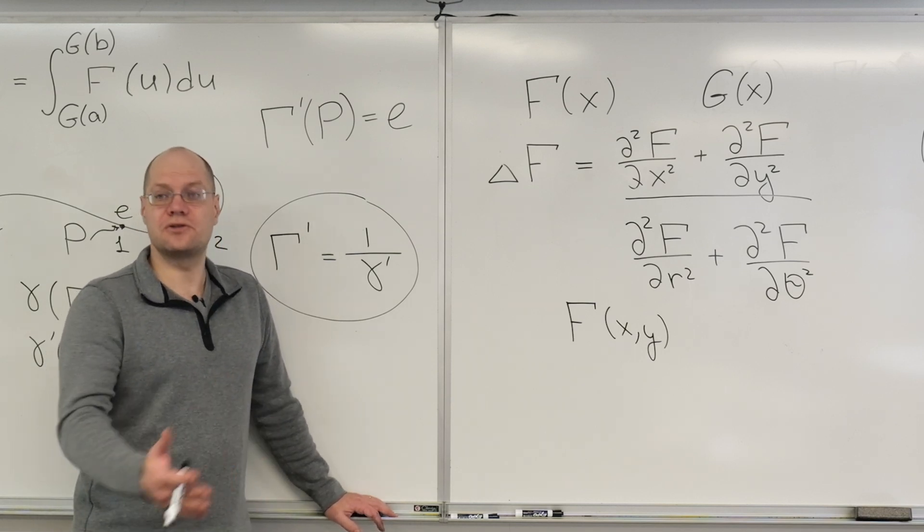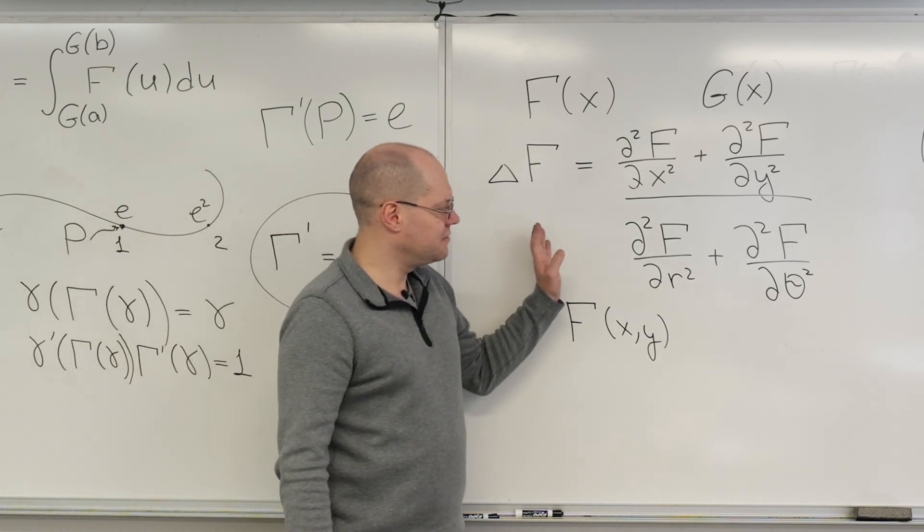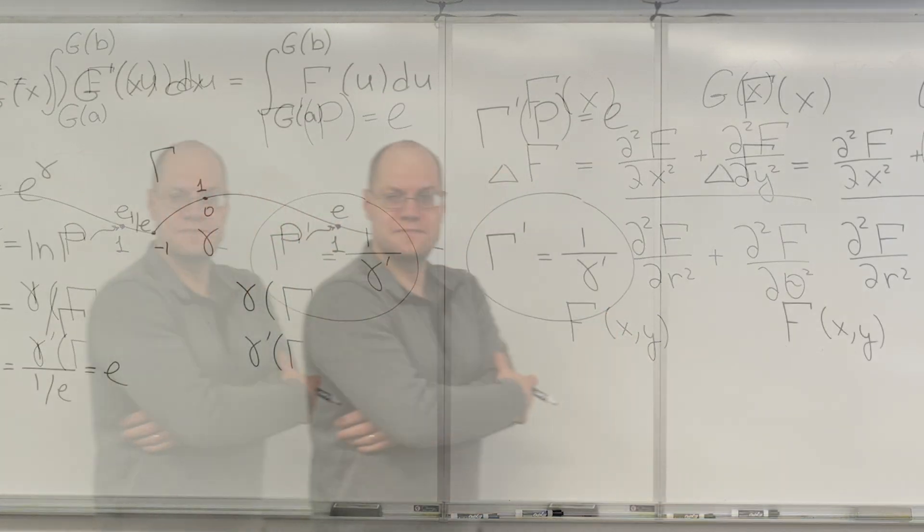And three quarters of the students do the wrong thing. And if you gave it to seasoned researchers in applied math, three quarters of them would do it incorrectly also. Because I think it's fundamentally vague and ambiguous. Does that make sense?